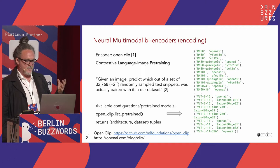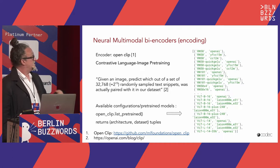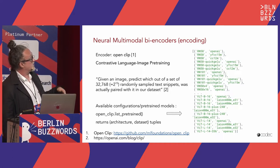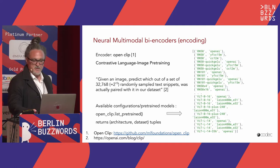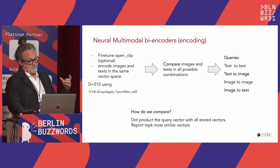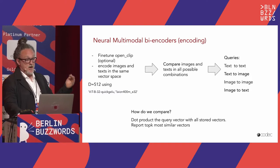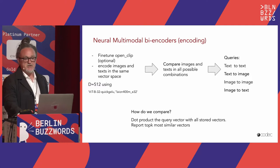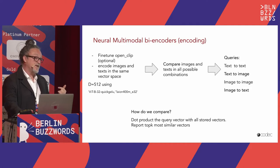OpenCLIP provides a vast configuration of additional models — many more than the original OpenAI model — which you can pick up and use. You can take OpenCLIP, potentially fine-tune it on your own domain, and encode images and text into the same vector space. Then you can compare images and text in all possible combinations: text queries returning images, image queries returning text, and so on — all four possible combinations.